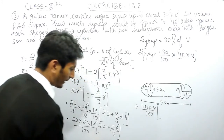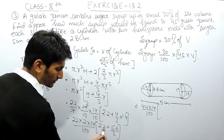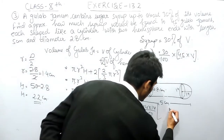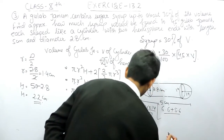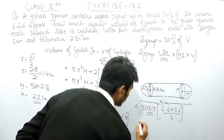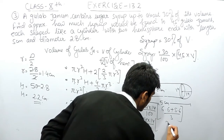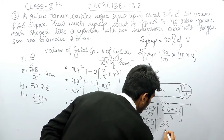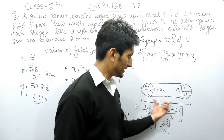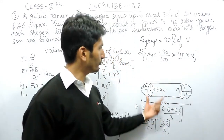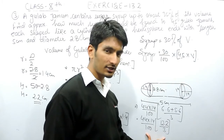Taking the LCM of 3 and 1, which is 3, and cross multiplying gives 6.6 plus 5.6 upon 3 inside the bracket. So the volume of a single gulab jamun equals 44 × 14 upon 100 multiplied by the bracket value. Now to find the syrup, that is 30% of the volume of 45 gulab jamuns, I substitute this volume.